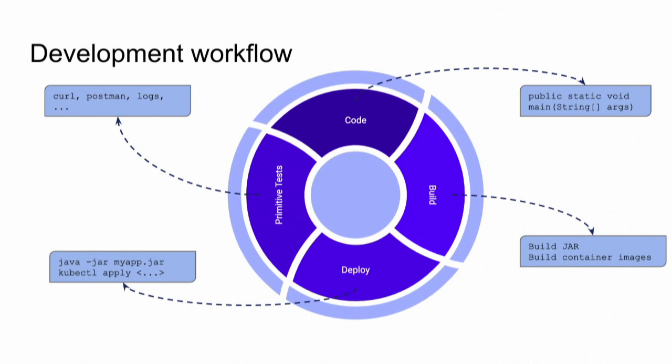Once we build our artifacts, we deploy it into an application server. In the context of microservices, we use fat jars with embedded Tomcat. And finally, we do some primitive tests — by tests here I mean the verification that we do, like viewing the logs, calling, interacting with the browser, and so on and so forth.